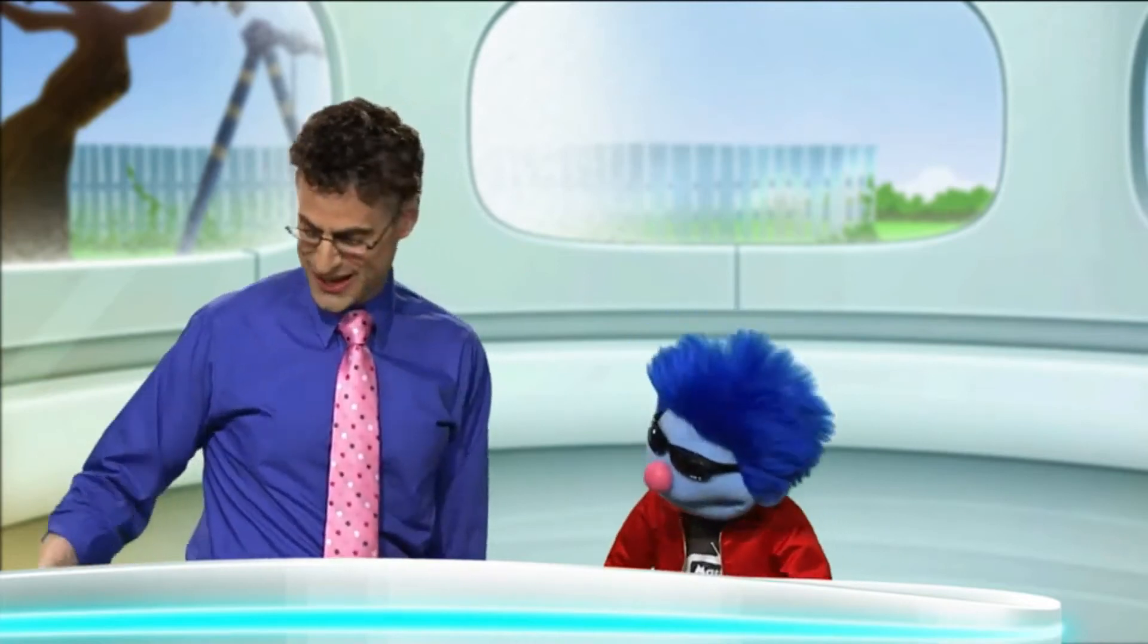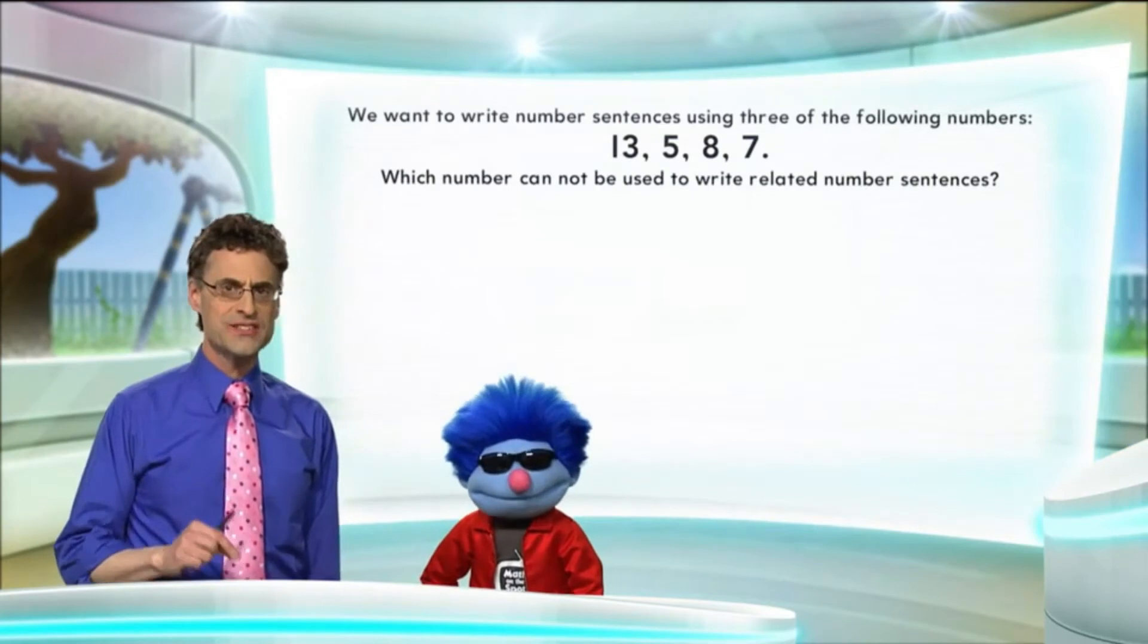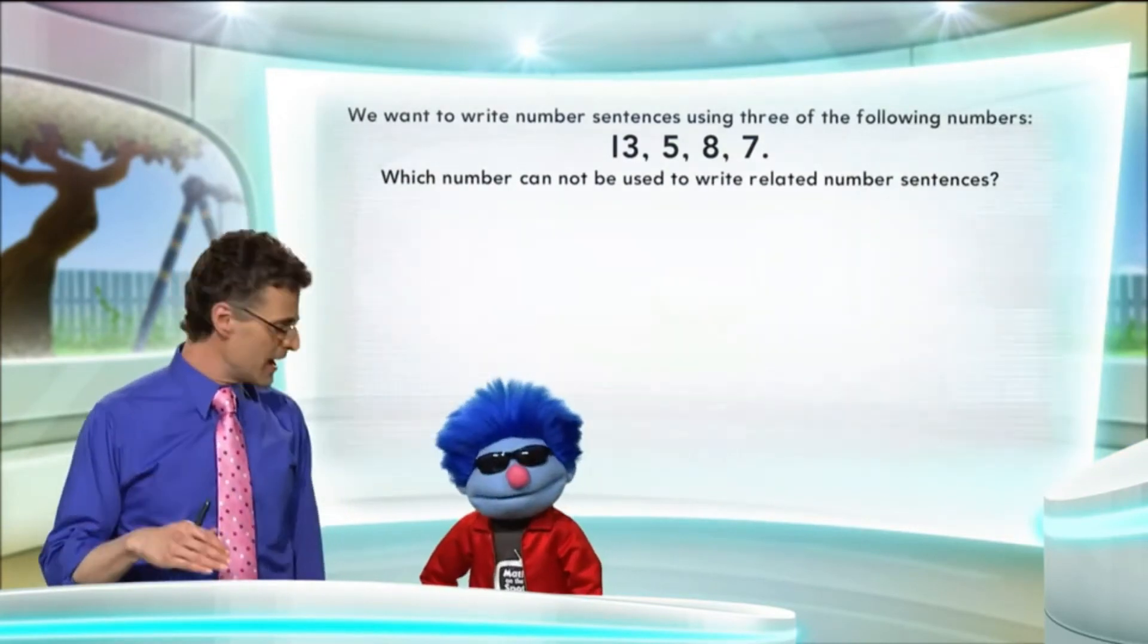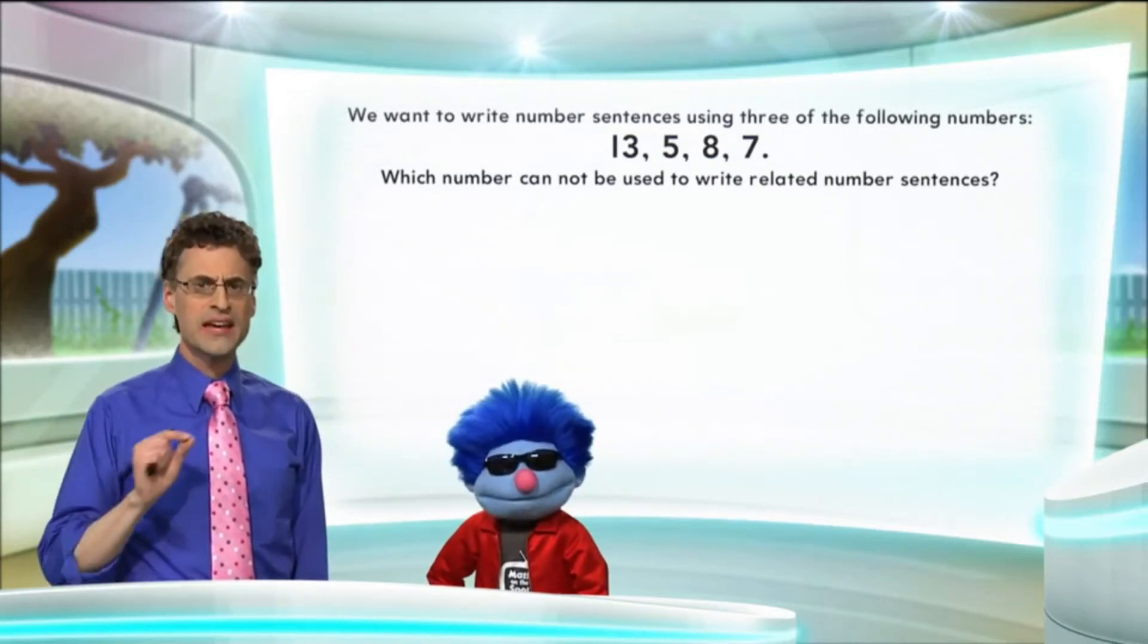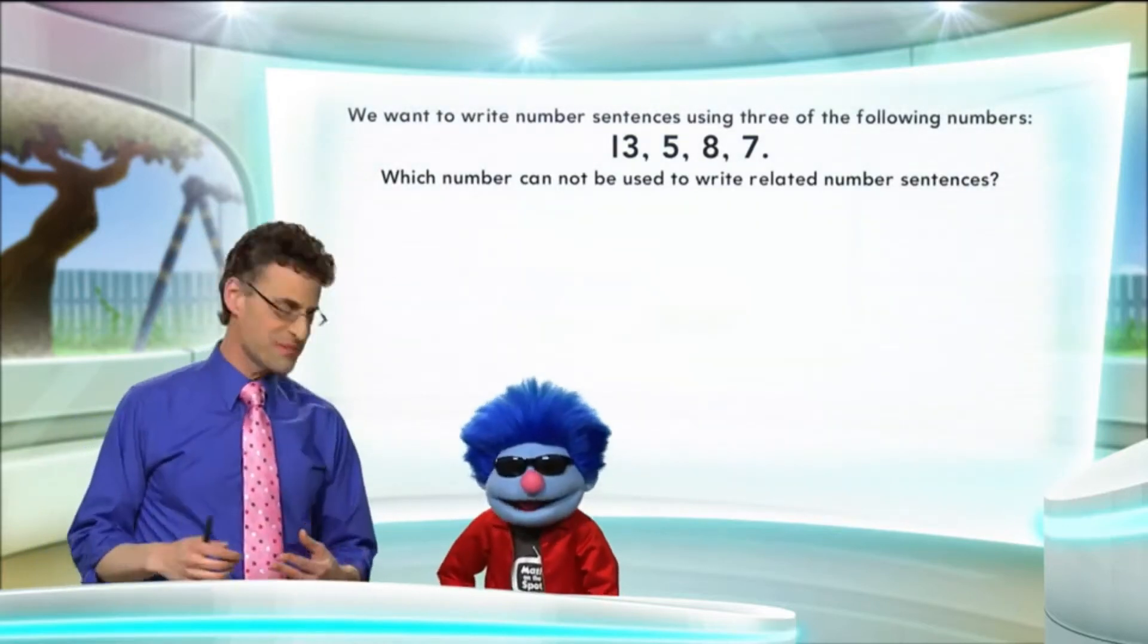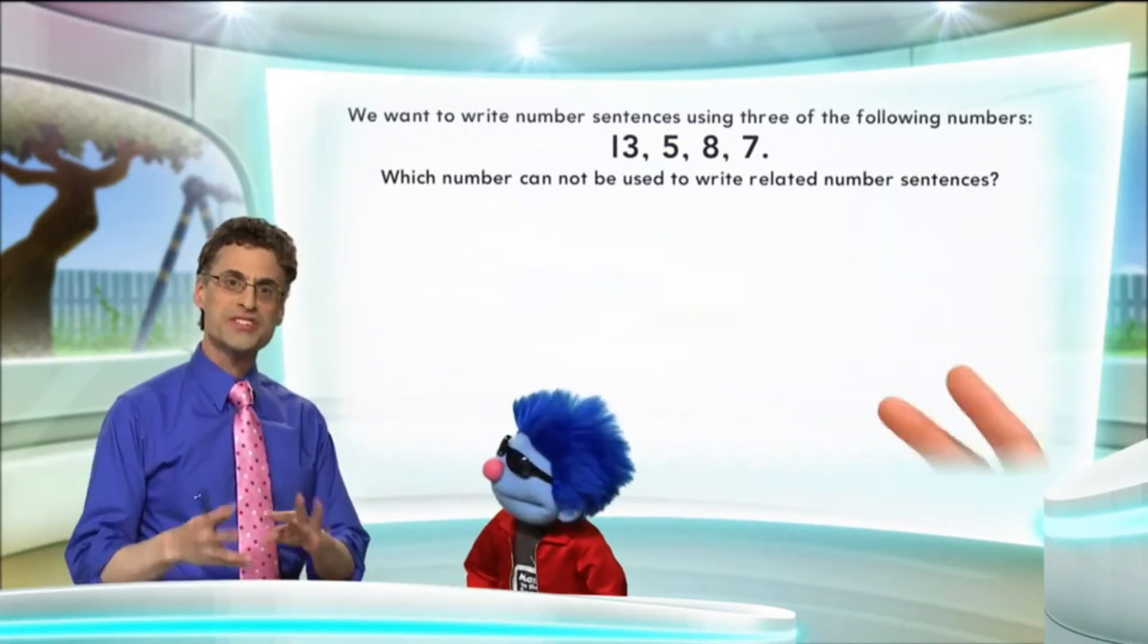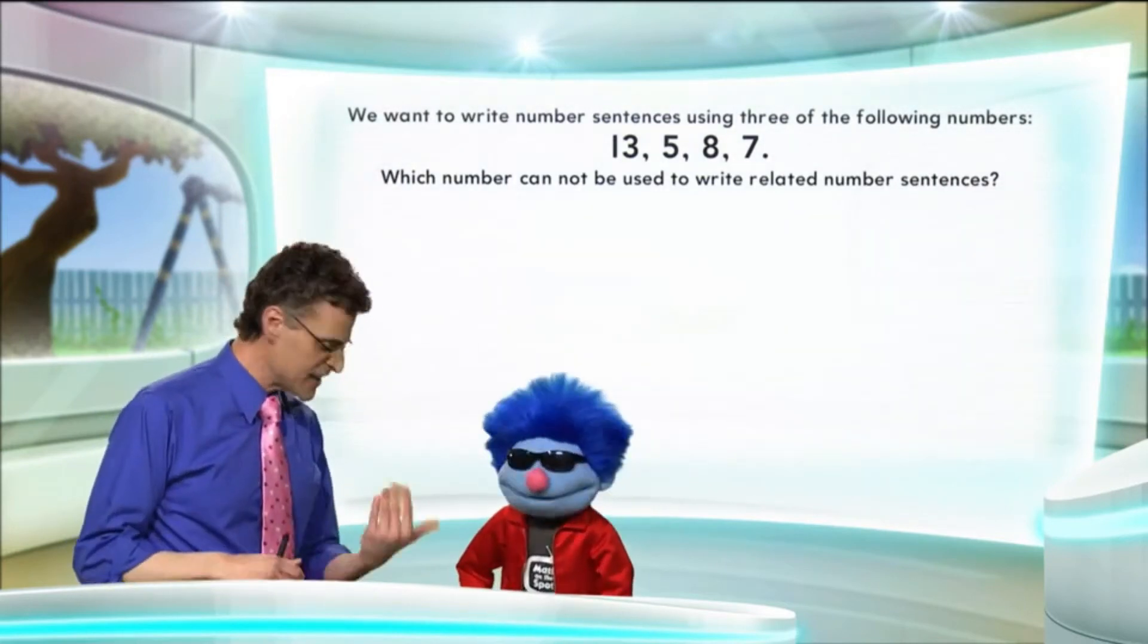Get over here, Mr. Cool Guy. Okay, here's what we want to do. We want to write number sentences using three of the following numbers: thirteen, five, eight, and seven. And the question is, which number cannot be used to write related number sentences? Let's find out. That's cool. Related number sentences just mean sentences that have the same numbers in different order using different operations. Let's take a look at some examples.